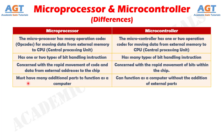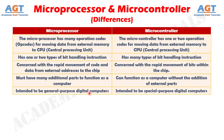Number 4: The microprocessor must have many additional parts to function as a computer, whereas the microcontroller can function as a computer without the addition of external parts. Number 5: The microprocessor is intended to be a general purpose digital computer, whereas the microcontroller is intended to be a special purpose digital computer.